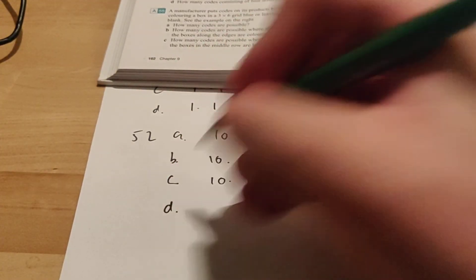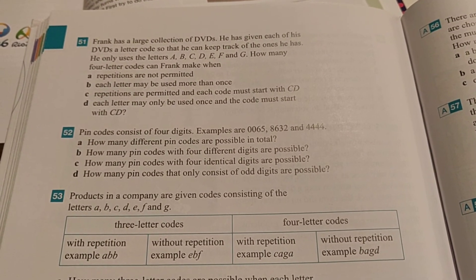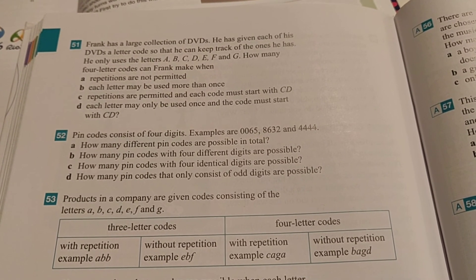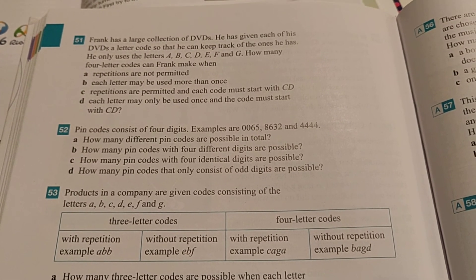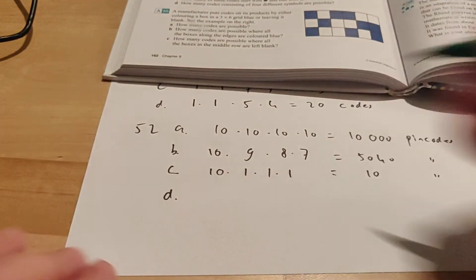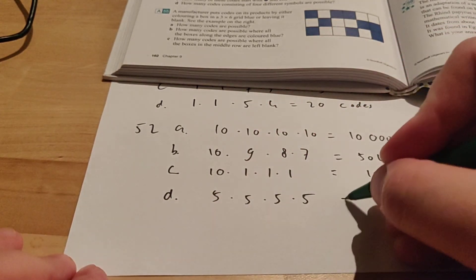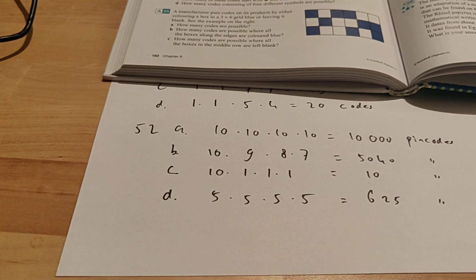And then exercise D. It says how many pin codes that only consist of odd digits are possible. So you have odd numbers and even numbers. The odd digits are 1, 3, 5, 7 and 9. So in this case, you have 5 odd digits. So you can make 5 times 5 times 5 times 5. So many codes. That's 625 different pin codes.